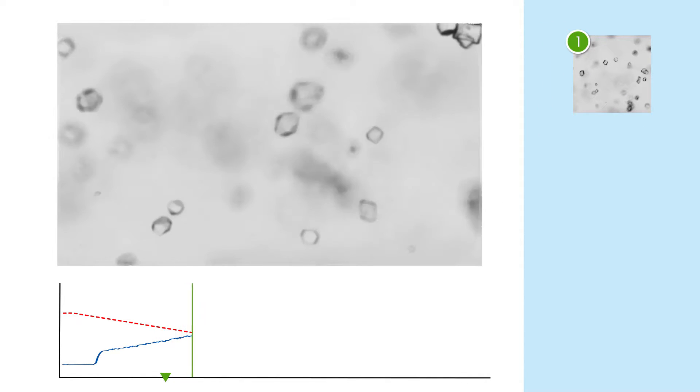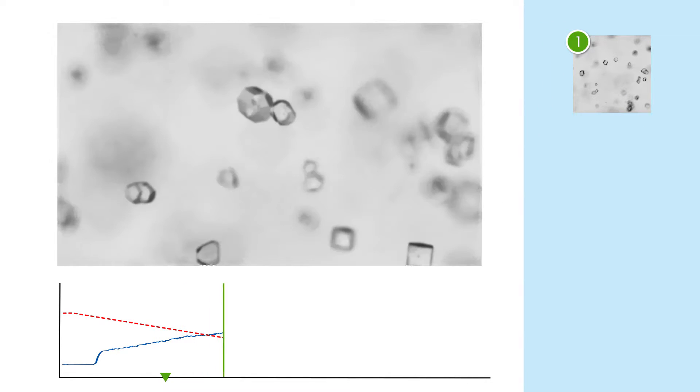Initially, block-like crystals appeared and began to grow, but quickly it becomes clear that agglomeration is going to play a critical role in this process.